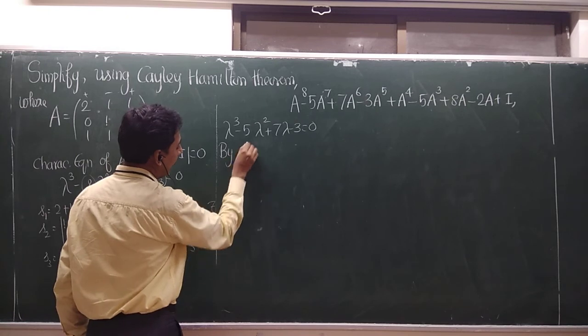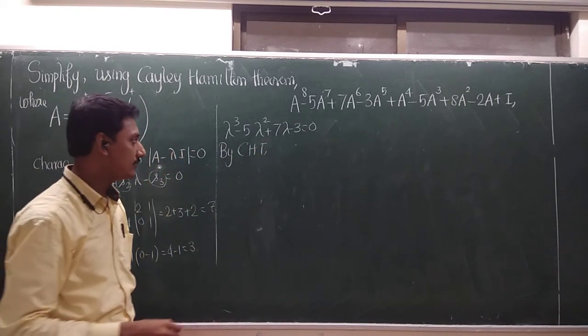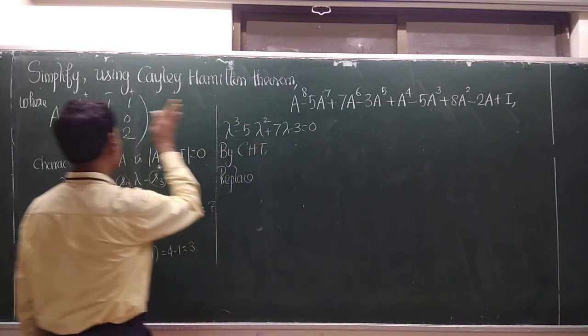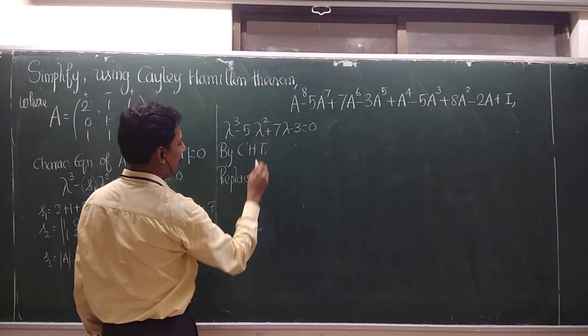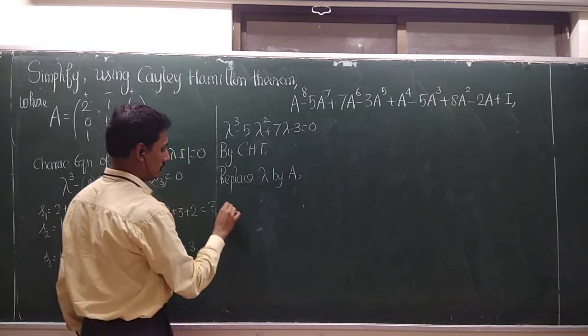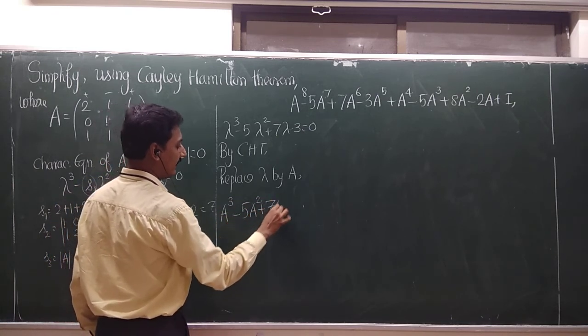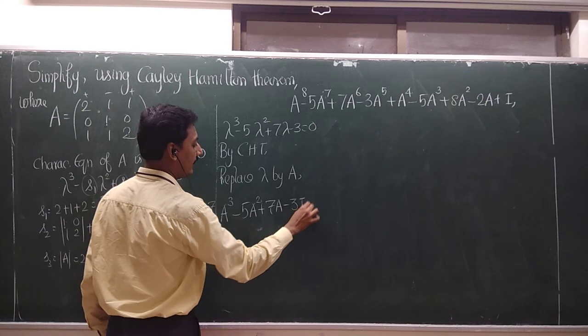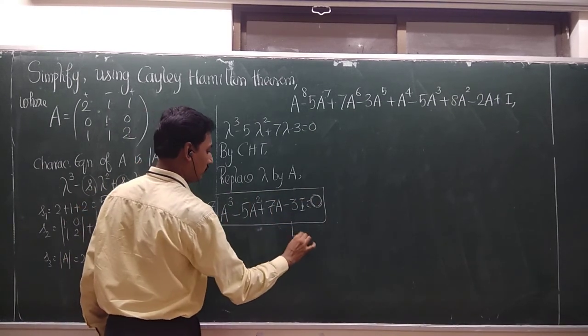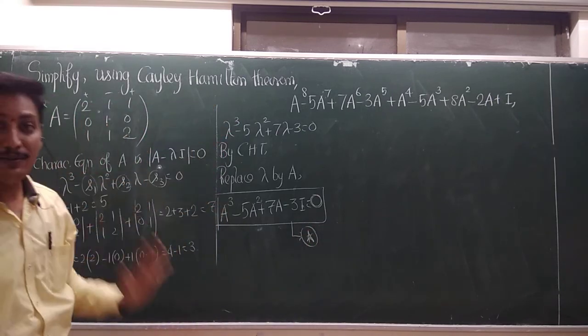But Cayley-Hamilton theorem states that every square matrix satisfies its own characteristic equation. So this is for the matrix A. So obviously, when we replace lambda by A, it satisfies this equation. So what we get? A cube minus 5A square plus 7A minus 3 into I is equal to 0 matrix. So this is my star equation.